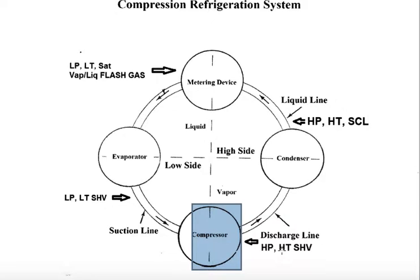We start out at the compressor: high pressure, high temperature, superheated vapor — move to the condenser. The condenser condenses the refrigerant, cools it, sub-cools it. Our liquid line now has high pressure, high temperature, sub-cooled liquid. We move to our metering device, which changes the pressure from high to low — almost like putting your finger over the end of a garden hose. We now have a low pressure, low temperature, saturated vapor-liquid mix known as flash gas, which moves into our evaporator. We absorb heat, boil off all the liquid, and by the time it gets to the suction line, it is a low pressure, low temperature, superheated vapor. We come back to our compressor, which cannot pump liquids — it can only pump vapors — and the process starts all over again.